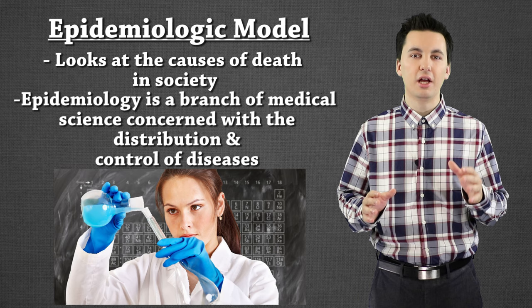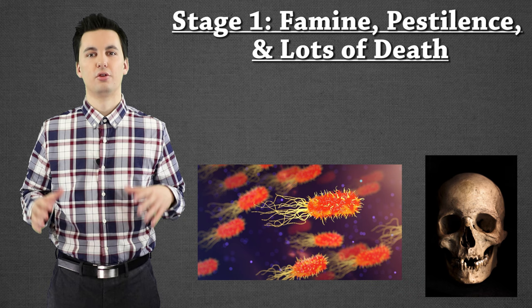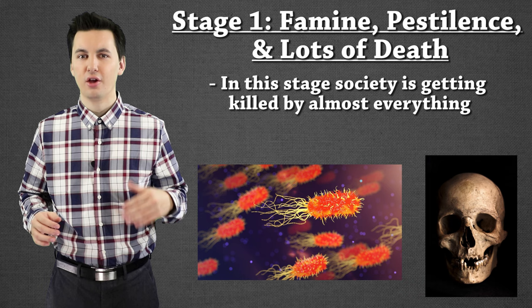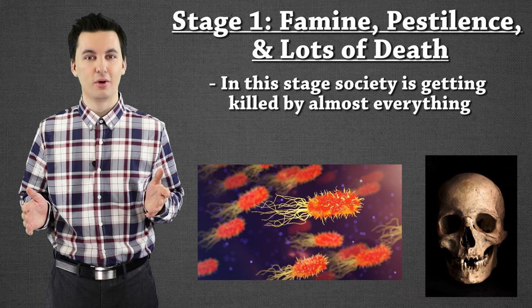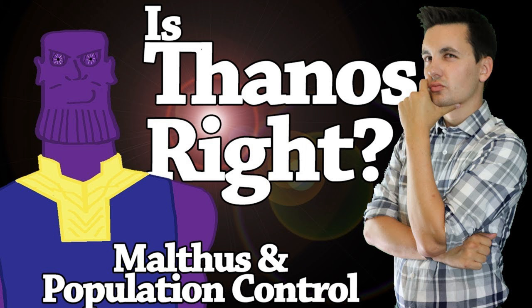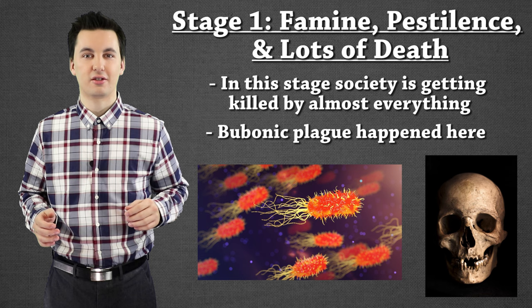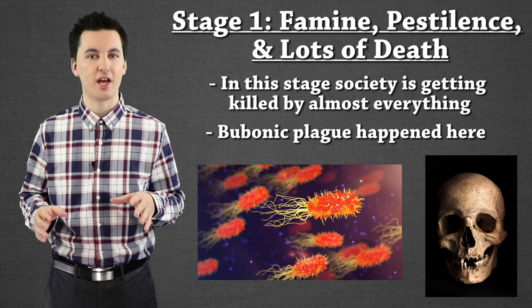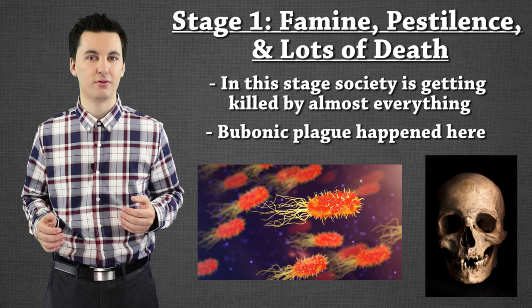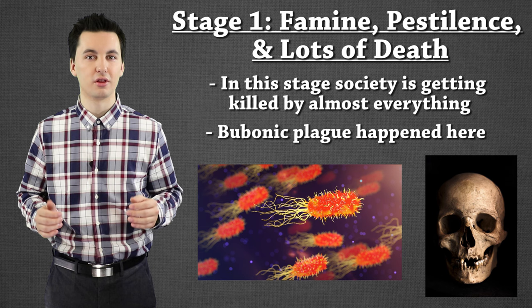We're dealing with diseases and death. The first stage of the Epidemiologic Transition Model is characterized by lots and lots of death. You're going to die from famine, pestilence, and animal attacks. This stage is not where you'd really want to be. This is where the Black Death happens, where we're going to see a lot of death occurring. We don't have medicines yet or ways to prevent things — even breaking a bone could cost you your life. Society is very fragile, it's easy to die, and we're going to have a lower life expectancy.